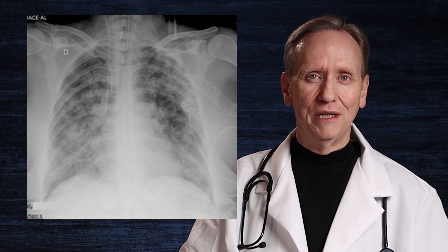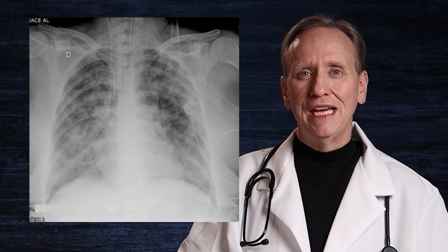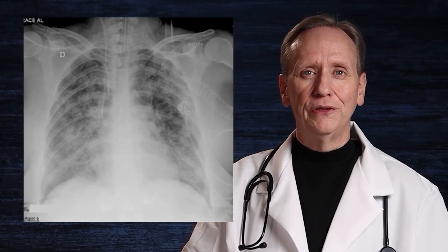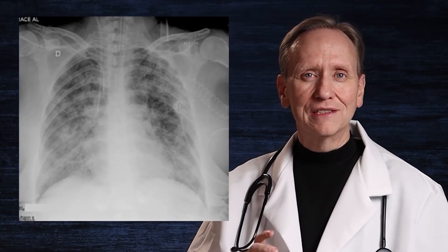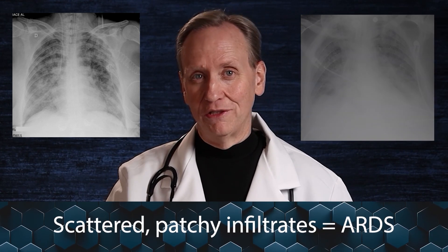Now let's talk about ARDS. ARDS is also very difficult to diagnose just from an x-ray, but there are a couple of elements. It does look radiolucent and kind of fluffy, but it's a little more splotchy. Comparing both x-rays: pulmonary edema looks really fluffy, while ARDS also looks kind of fluffy but more splotchy. We describe ARDS as scattered patchy infiltrates — that's compared to pulmonary edema's fluffy infiltrates.